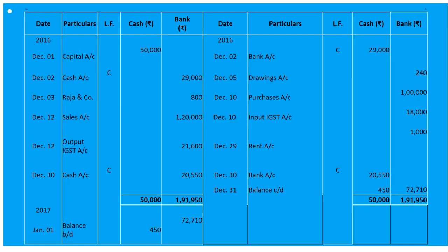On December 30th, deposited into bank the balance of cash in excess of 450 rupees — we keep 450 as opening cash for next month, so 'By Balance c/d' 450. We total all debit and credit transactions and do a contra entry for the excess: cash account debit to bank account — 20,550. The balance brought down on January 1st will be 450 in cash and 72,710 in bank.